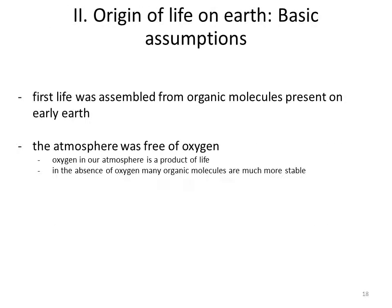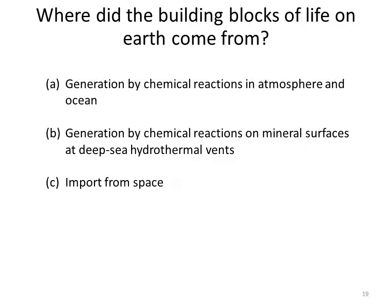Some basic assumptions that most, if not all, origins of life on Earth theories have in common are: first, life was assembled from organic molecules present on early Earth; and second, the atmosphere of early Earth was free of oxygen, because the oxygen in our atmosphere is a product of life. The absence of oxygen allowed certain organic molecules to accumulate, because they are much more stable without oxygen present. Three sources of these building blocks have been put forth, and these sources are not mutually exclusive but may have contributed different types of building blocks.